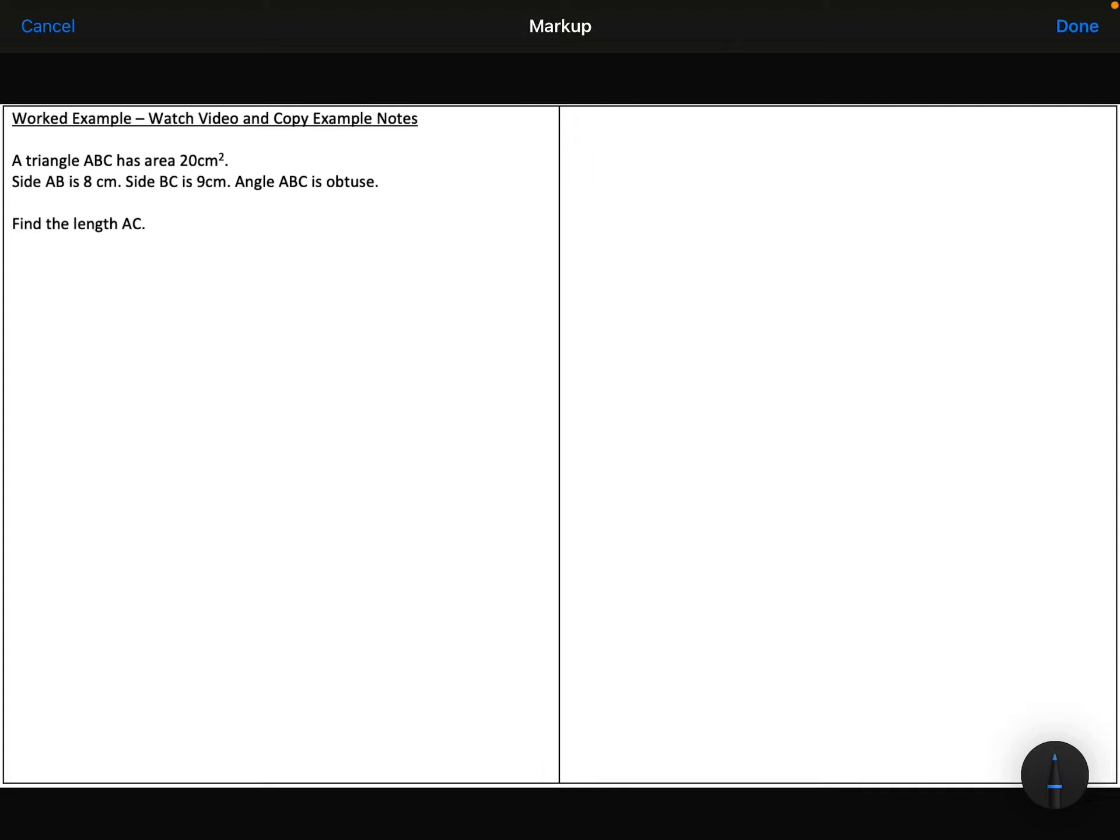A triangle ABC has area 20 centimetres squared. Side AB is 8 centimetres, side BC is 9 centimetres, and the angle ABC is obtuse. I need to find the length AC.